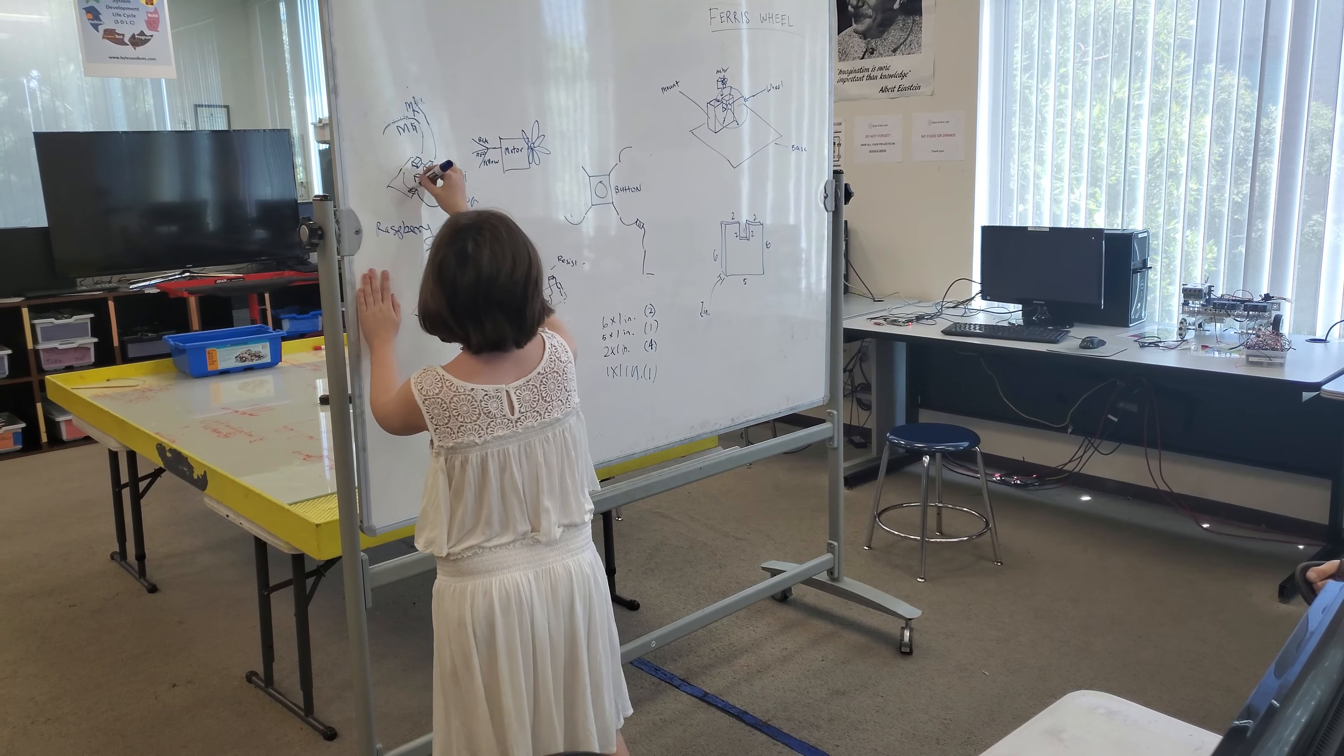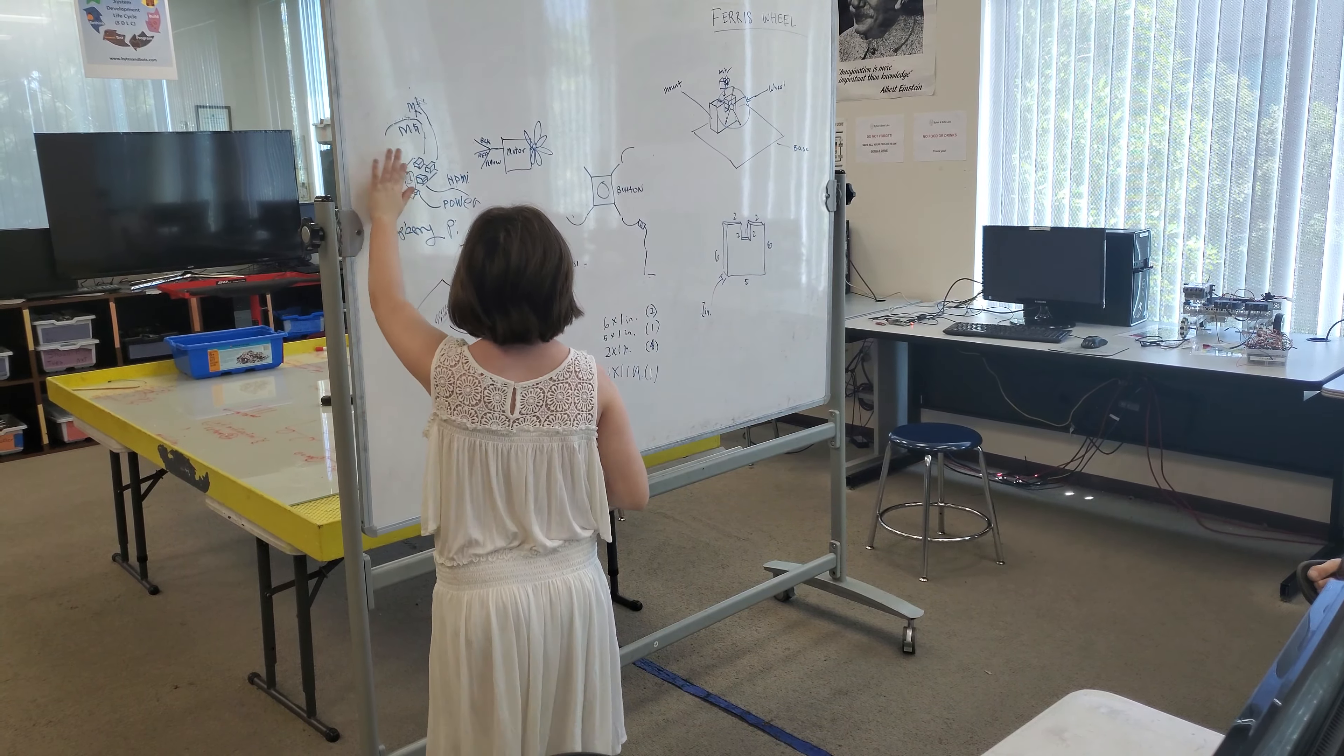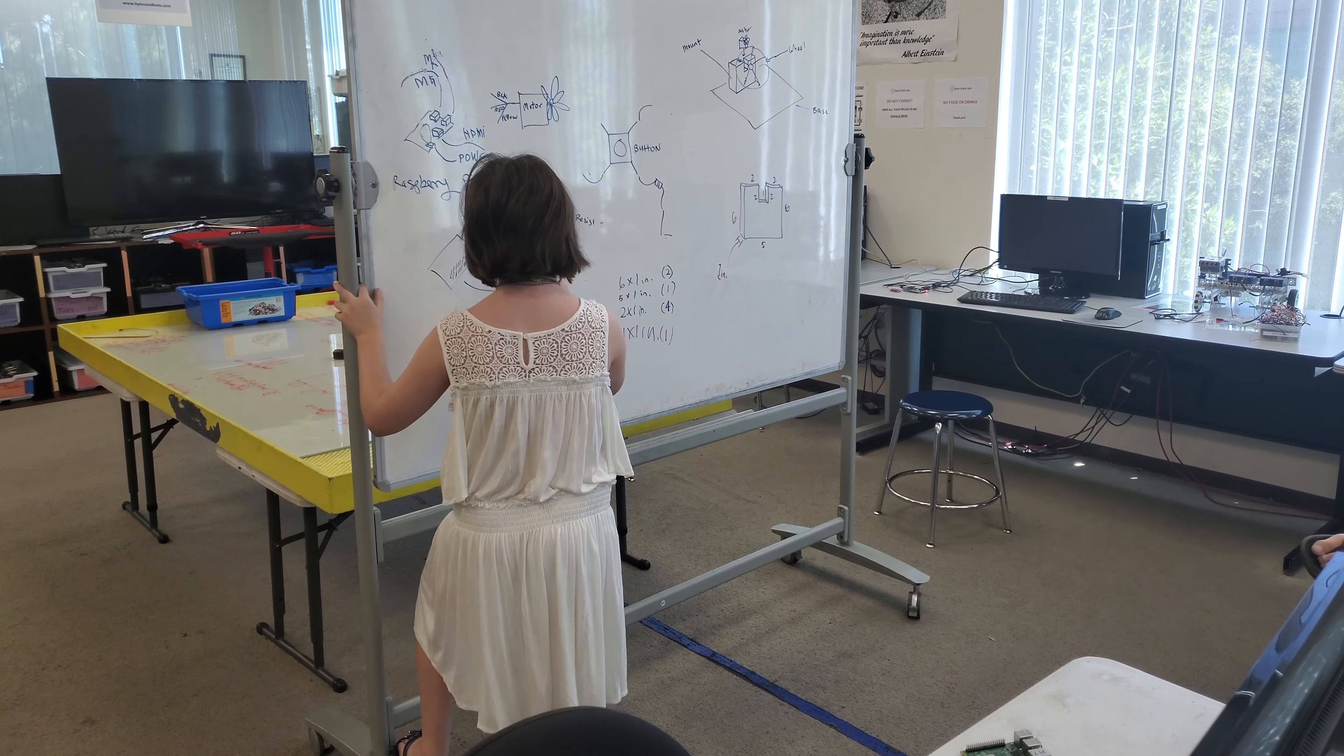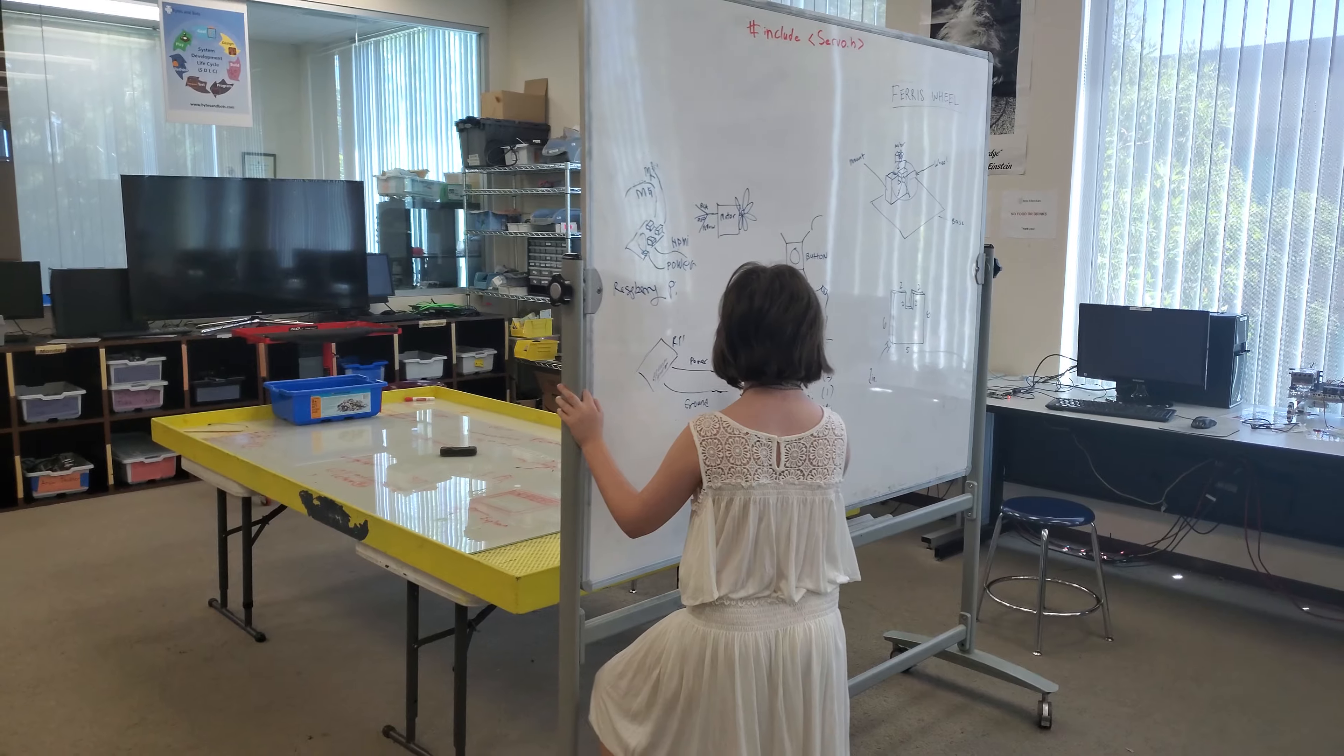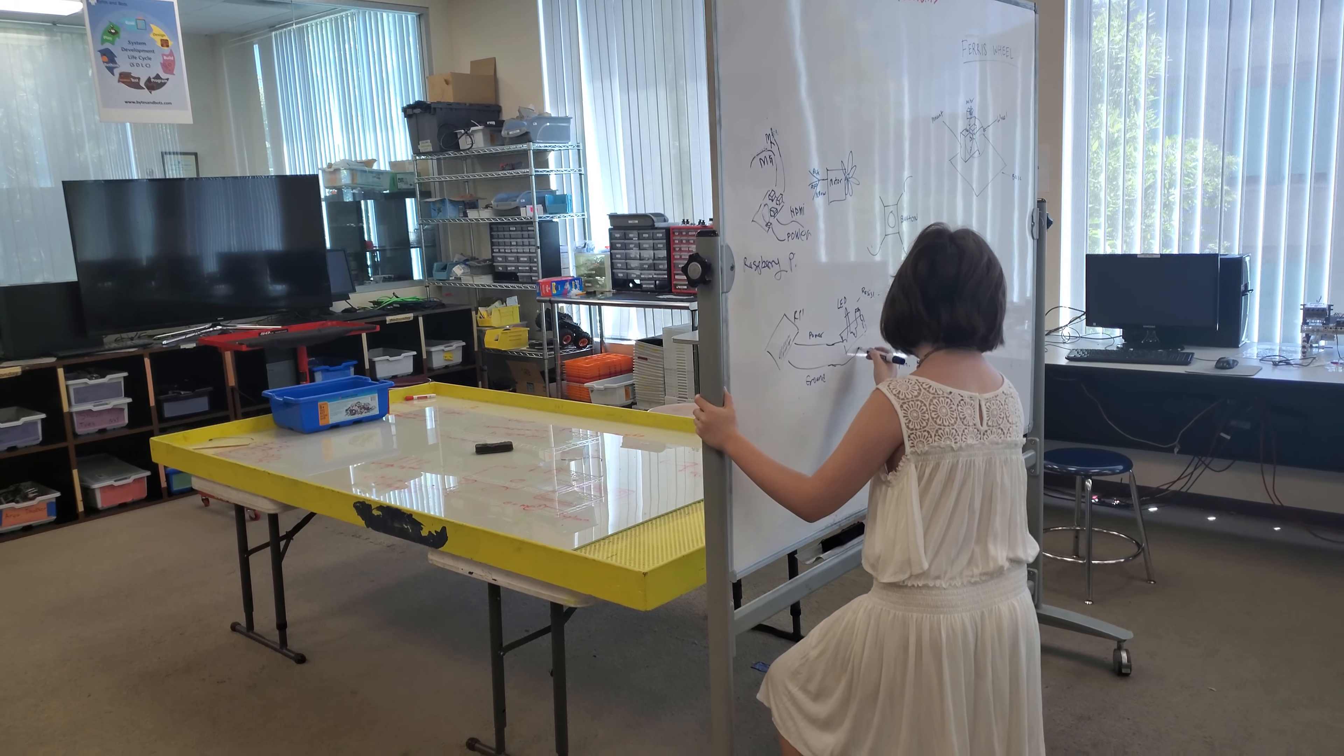This is the Raspberry Pi. This is the LED and the power goes to the longer leg on the LED and the resistor goes to the shorter leg. And this is the ground. The ground goes to the resistor.